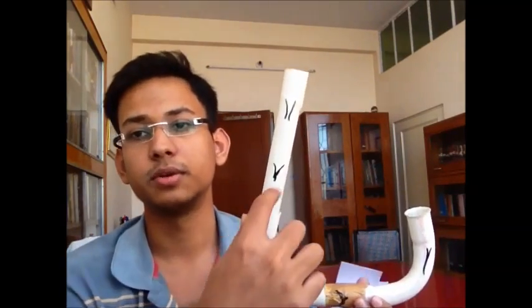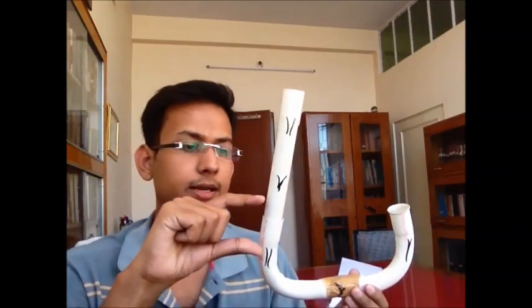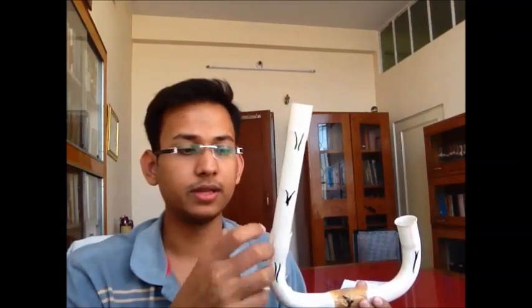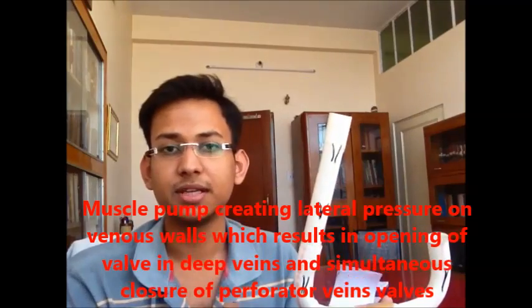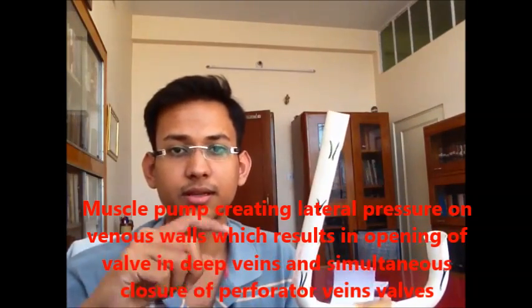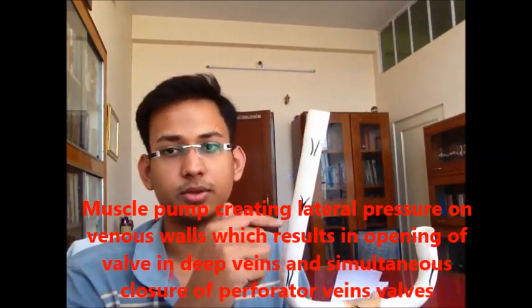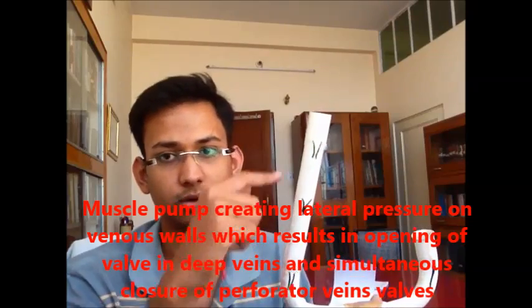Now, what is the function of valves? For example, a column of blood here is located. Now, when it is injected upwards, when the pressure becomes low, when there is a pulse of pressure, it goes from here to here.